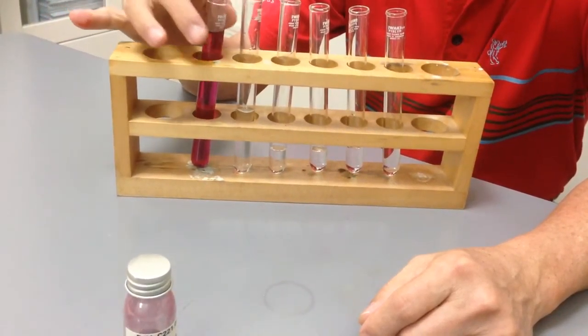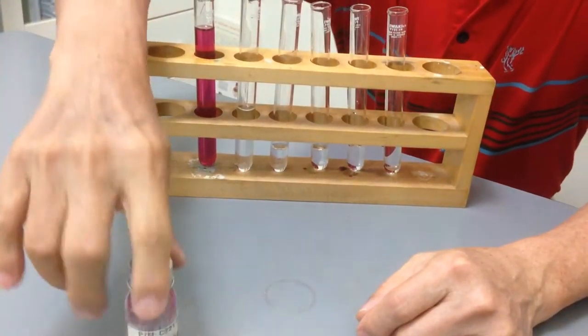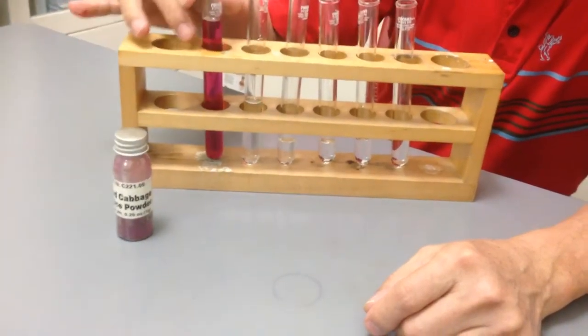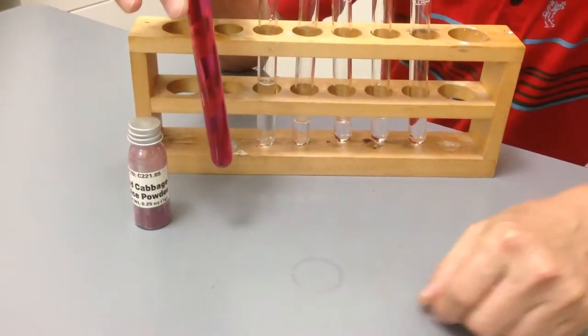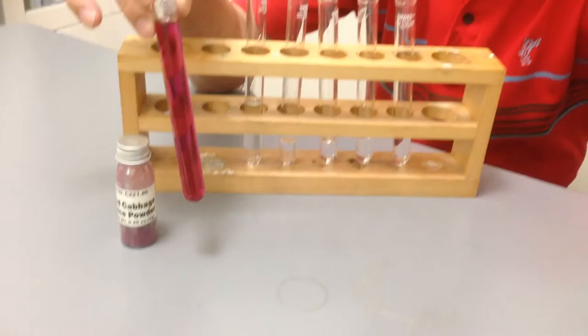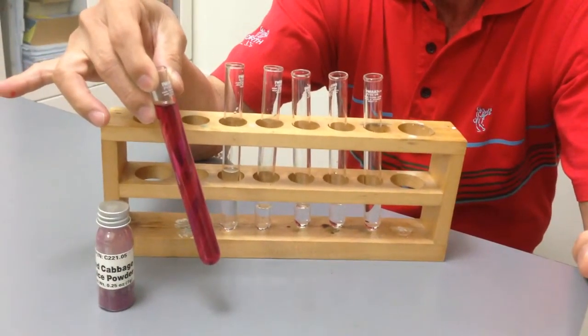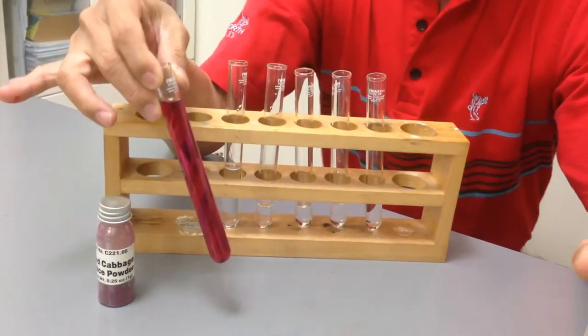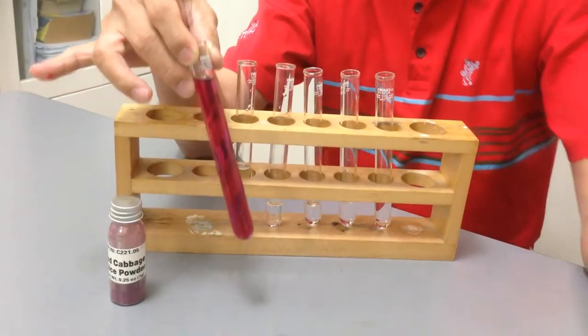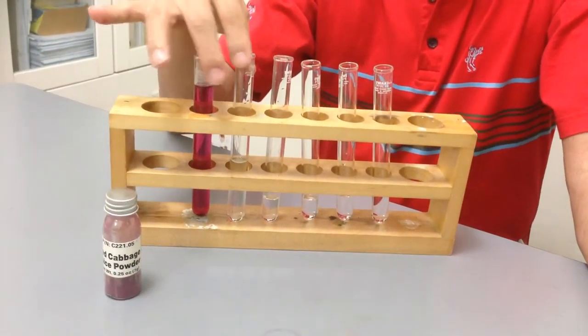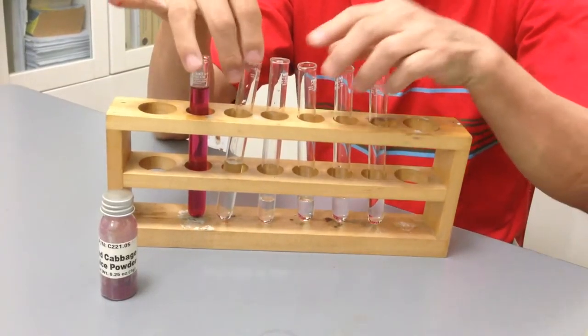We have a red cabbage powder which we made into a solution, and it is an indicator for acidity and alkalinity. Now over here we have five test tubes.